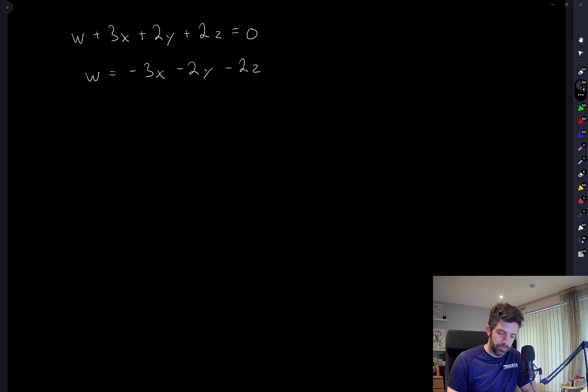So I started with the first equation and just rearranged it so that I have W in terms of all the other variables. This will allow me to eliminate W from all the other equations.